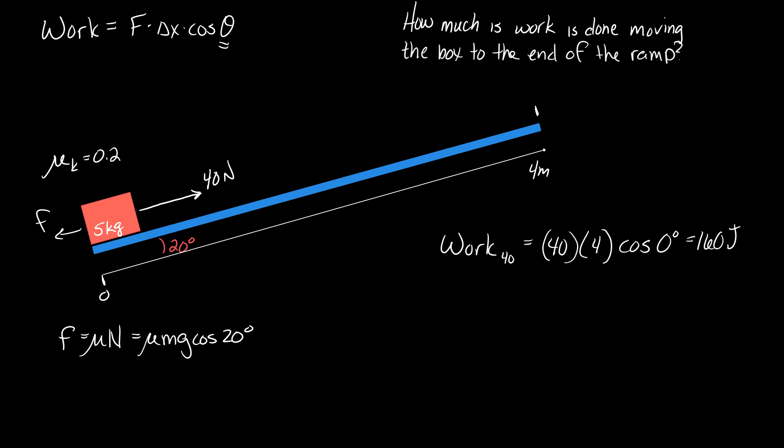This cosine comes from looking at the component of the weight that is into the ramp. So I get our cosines and our sines and our thetas mixed up. They mean different things.